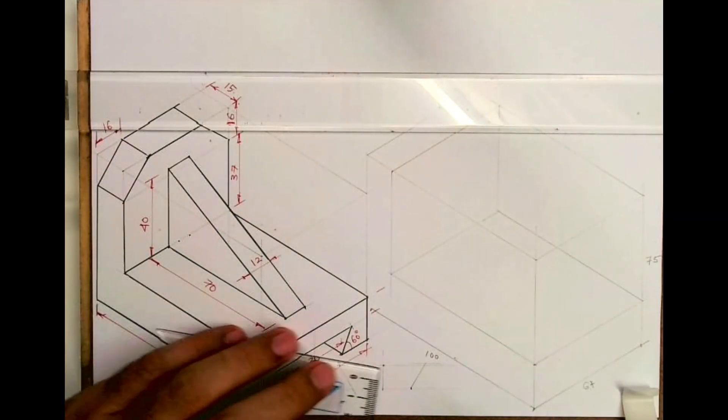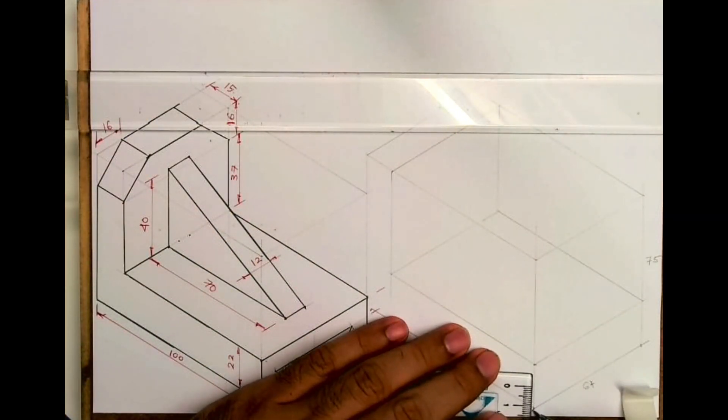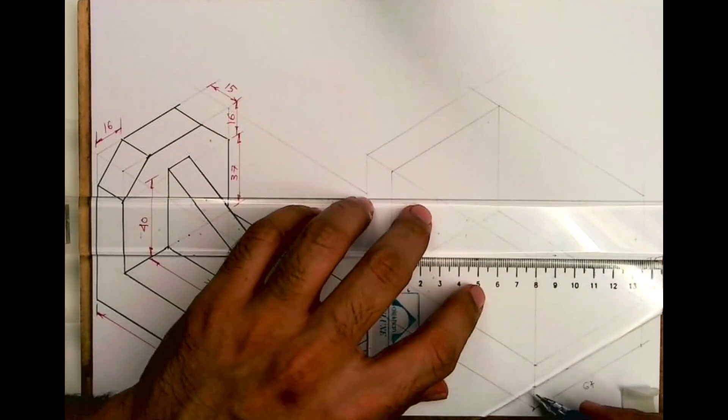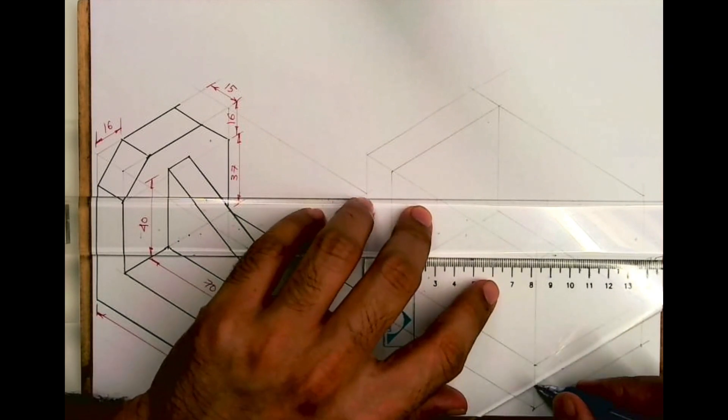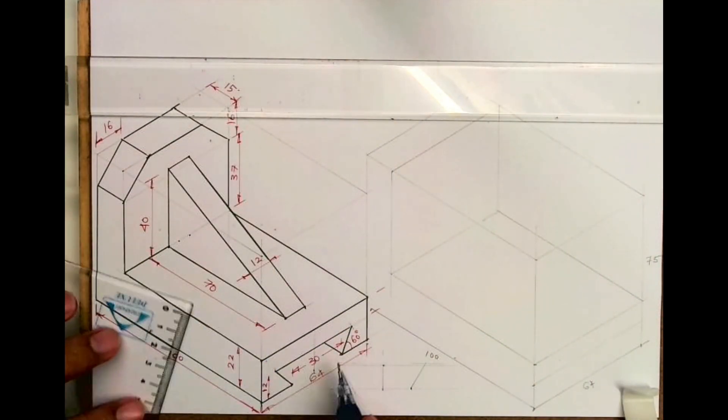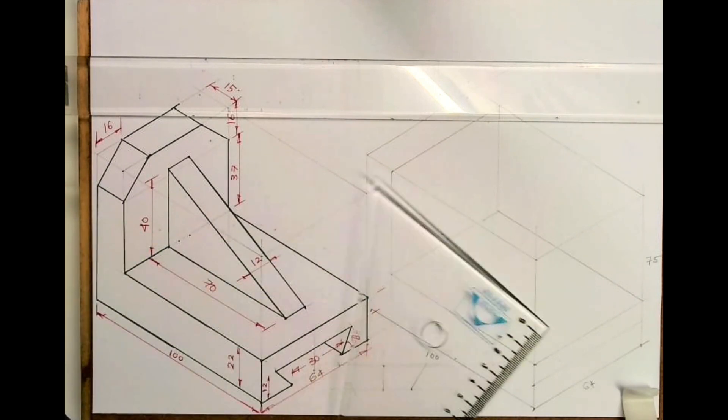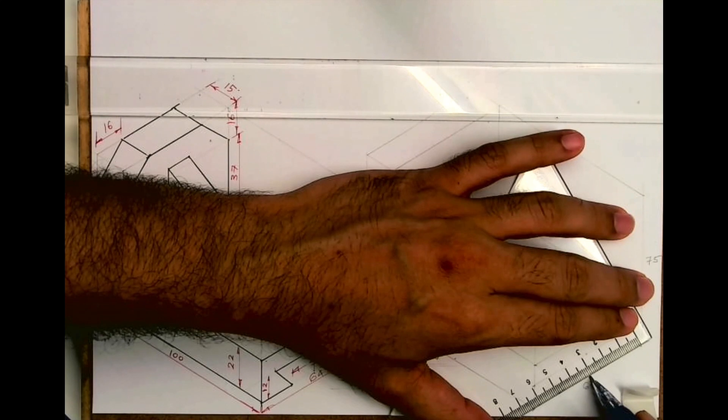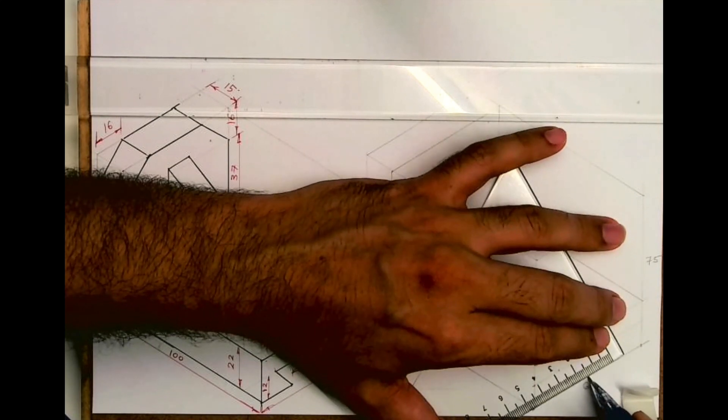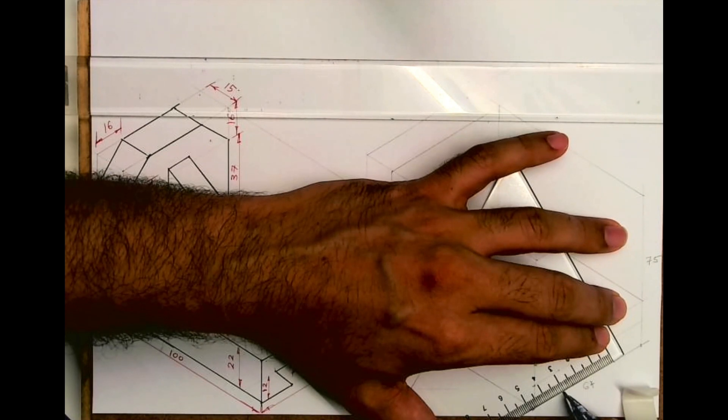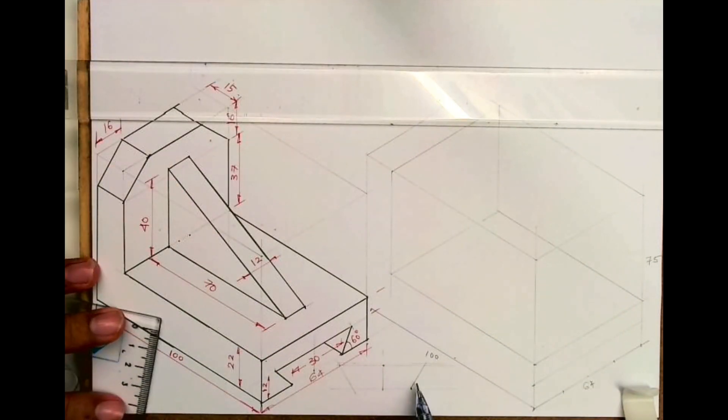After that, you take height 12 over here when you draw a line. Now what we are trying to do, we are trying to draw that dovetail slot. If you see, this is how much? 30. So I'll take the midpoint of this 32, and then I will take 15, 15 on both the sides.